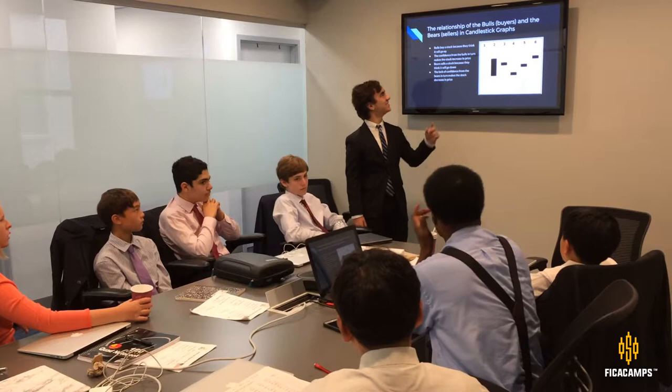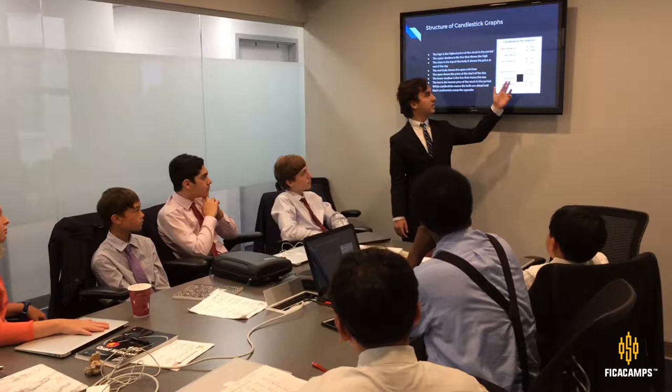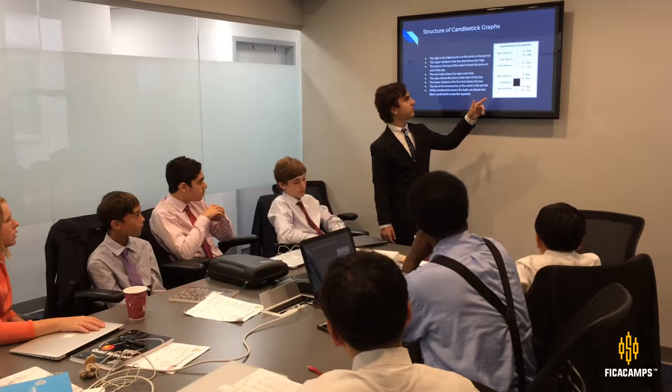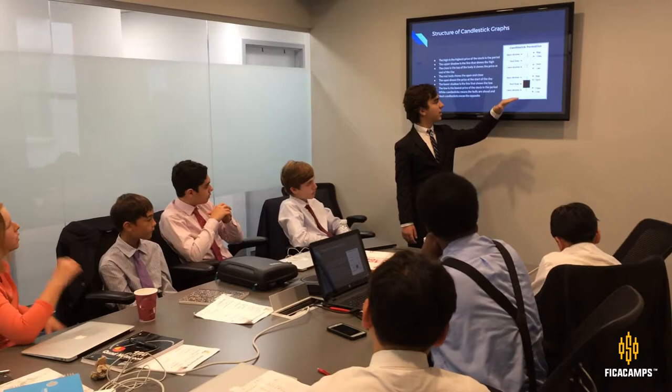The structure of candlesticks. I have examples of the down and up candlesticks. They have three main parts: the lower shadow, upper shadow, and real body. The real body goes from the open to the close — which one is on top depends on the color. The upper shadow extends from the top of the real body up to the high of the entire session, and the lower shadow extends from the bottom to the low of the entire session.